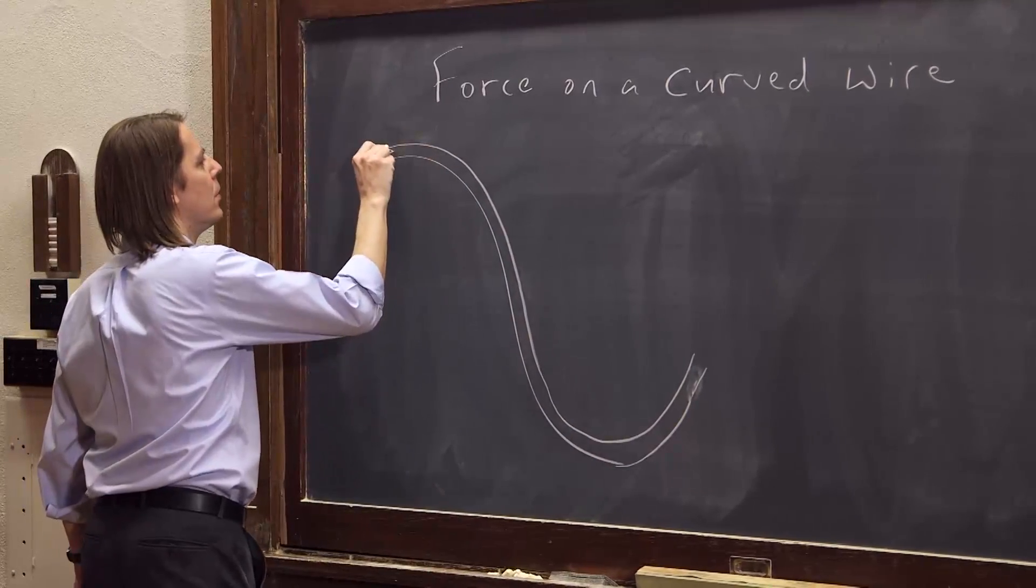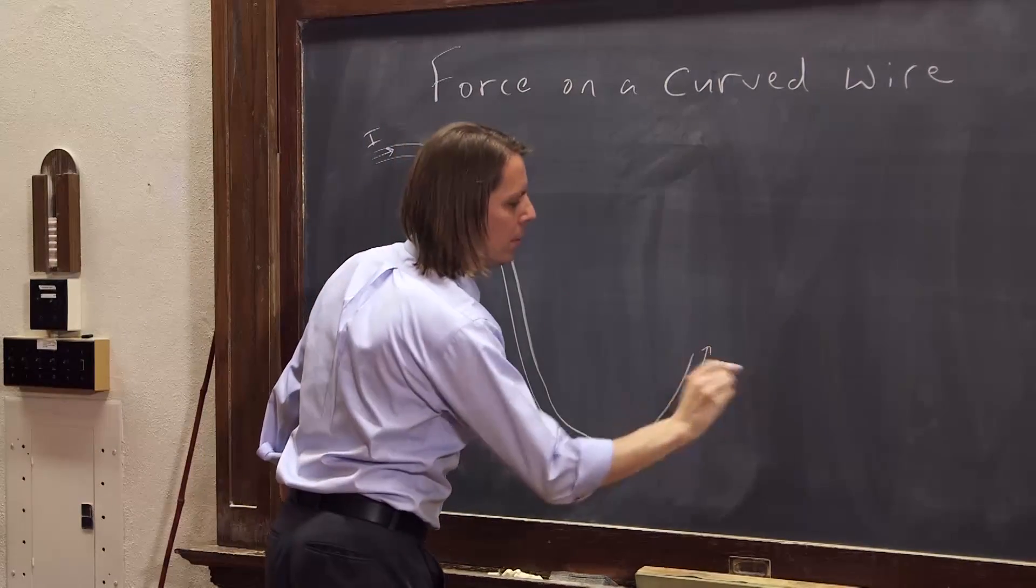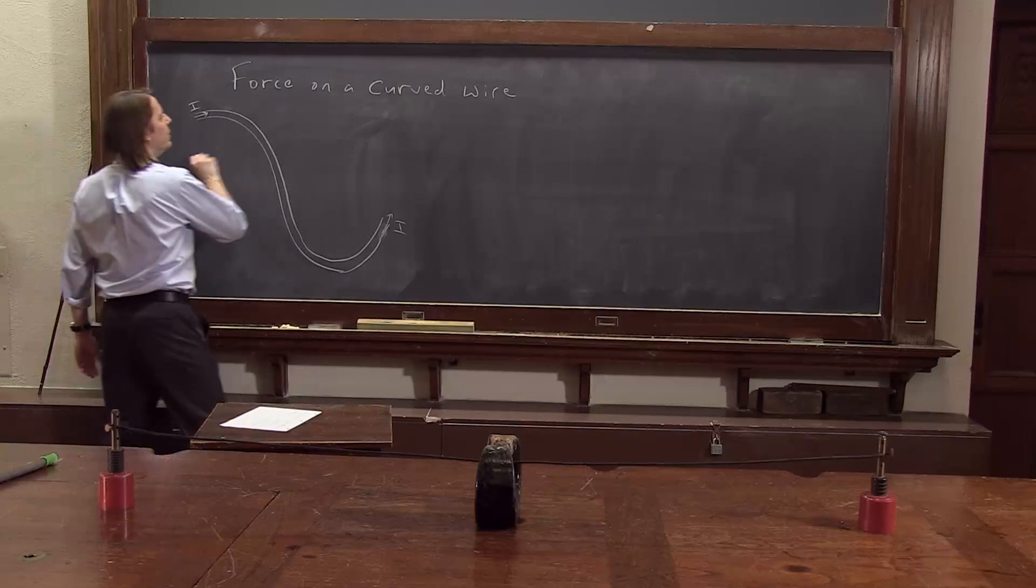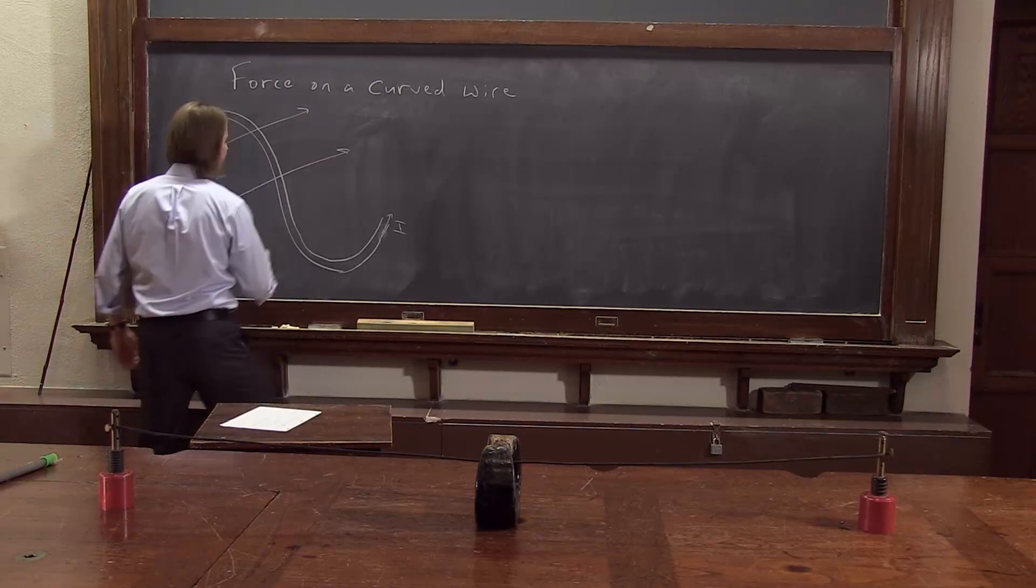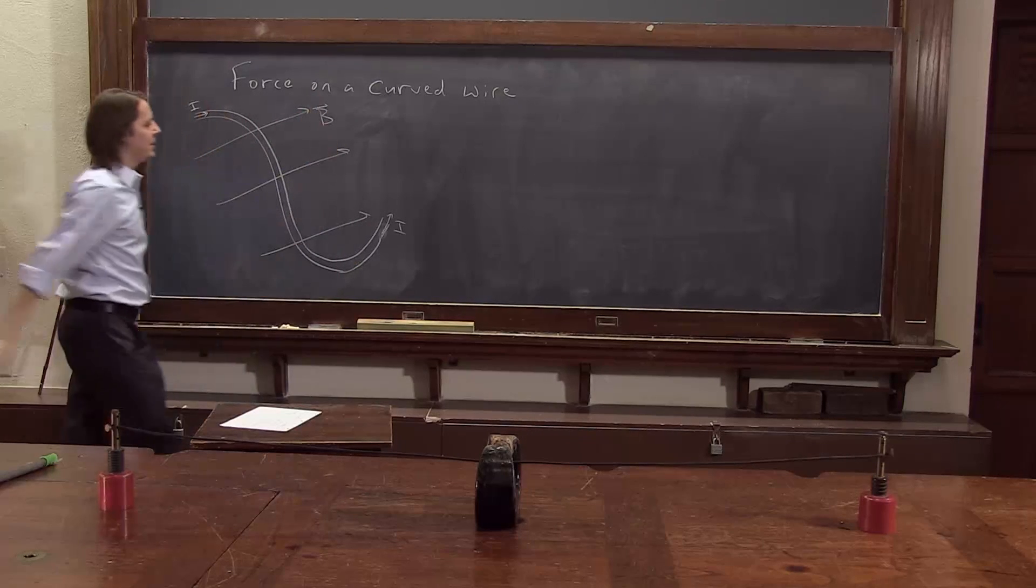And there's current flowing through this wire. The same current has to flow all the way through the wire, like that. And let's put it in a magnetic field. Doesn't have to be uniform, but I'll draw it uniform just to make it easier to see.